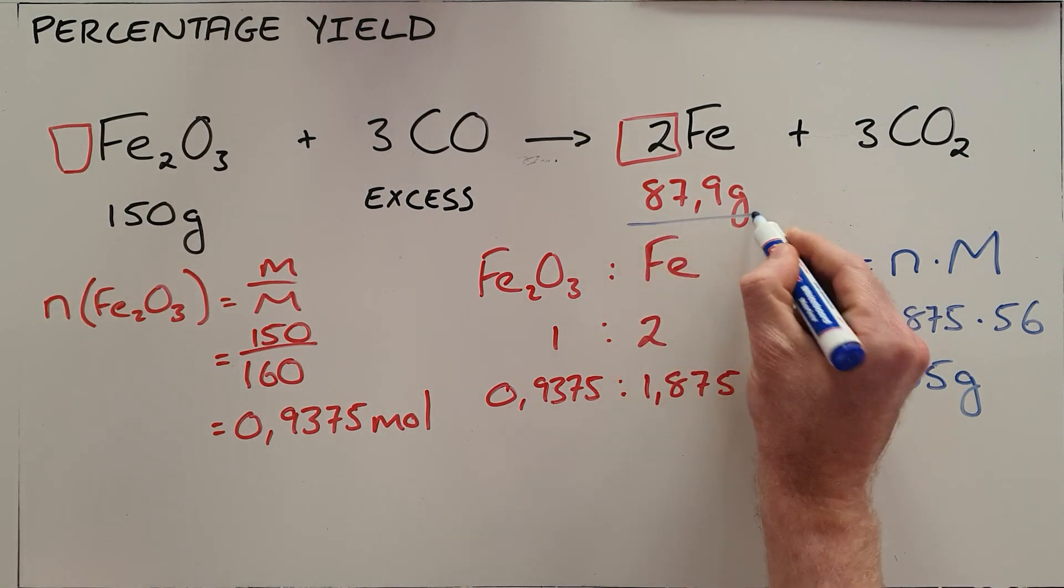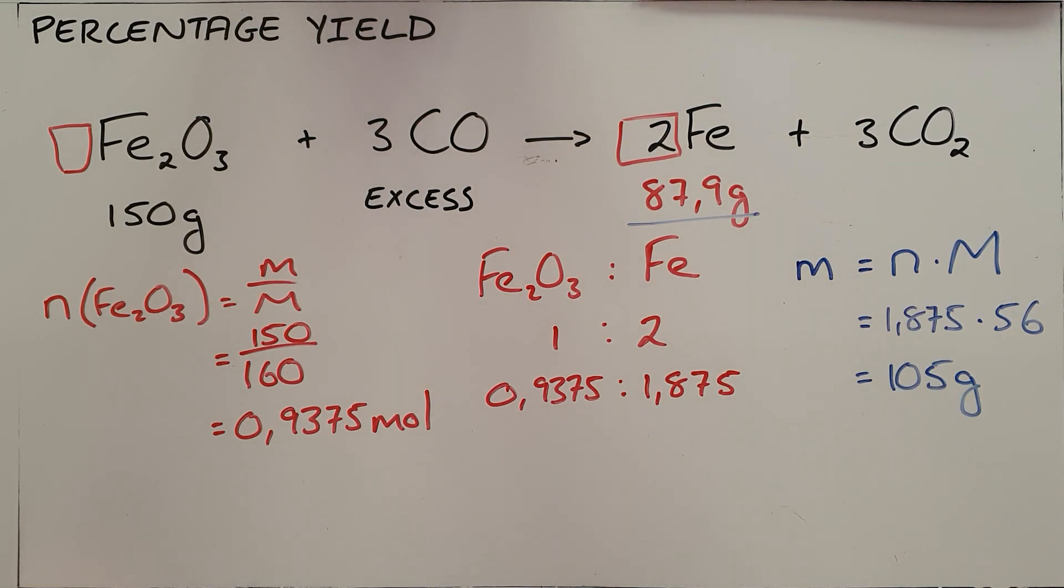Now this question has told us that we only produce 87.9 grams. Once again, this is most commonly as a result of impurities in your reactants, or it could also be inefficiencies in the reaction.